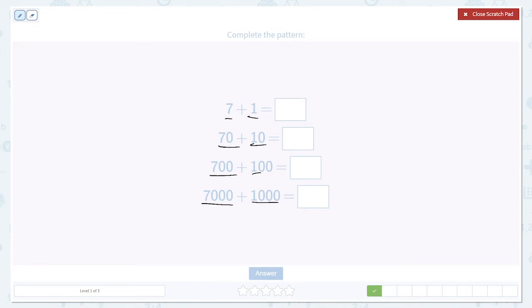On the right-hand side, 7 plus 1 is 8, 70 plus 10 is 80, 700 plus 100 is 800. And even without computing the sum, we can see the pattern. We're going to just add another zero and get 8,000.